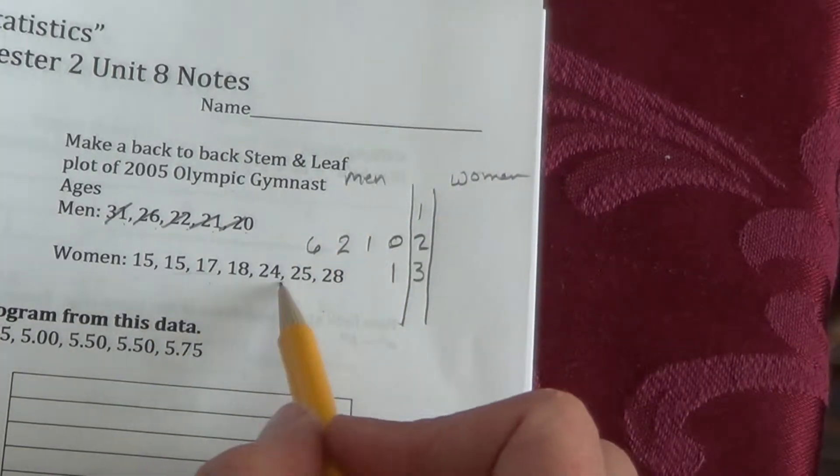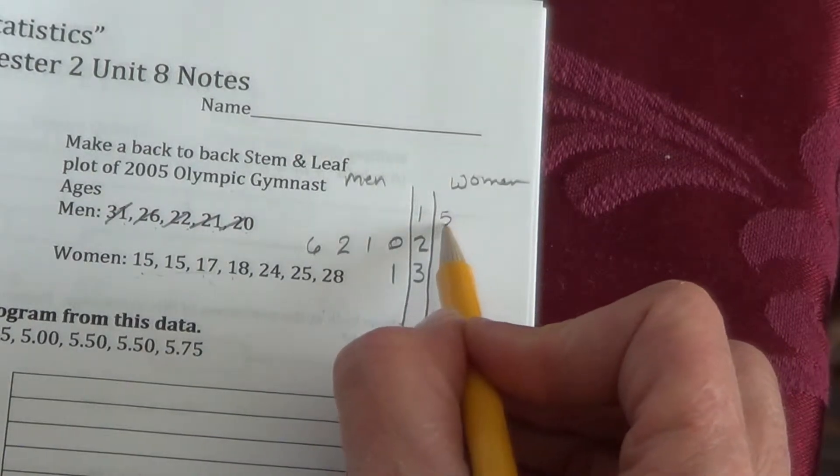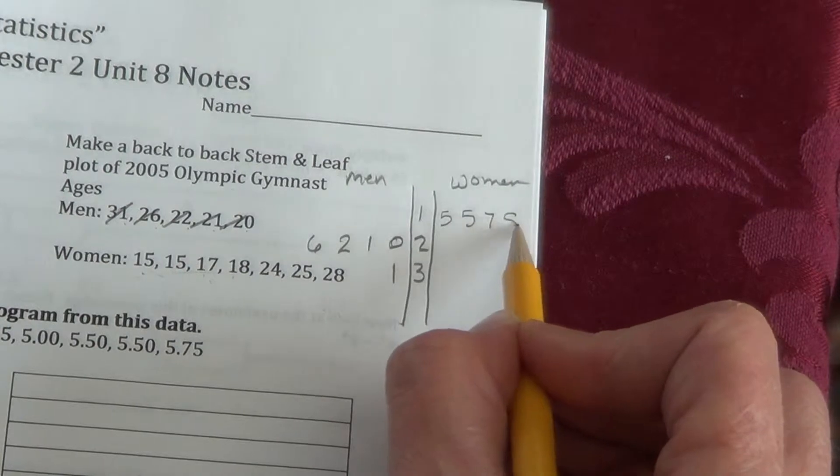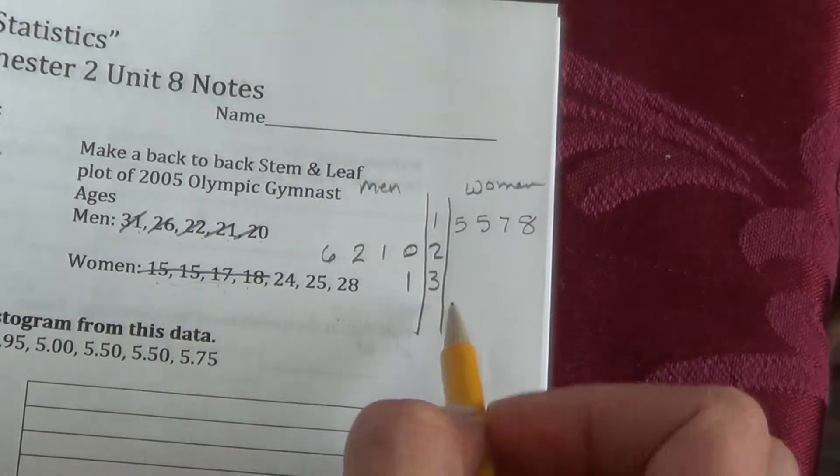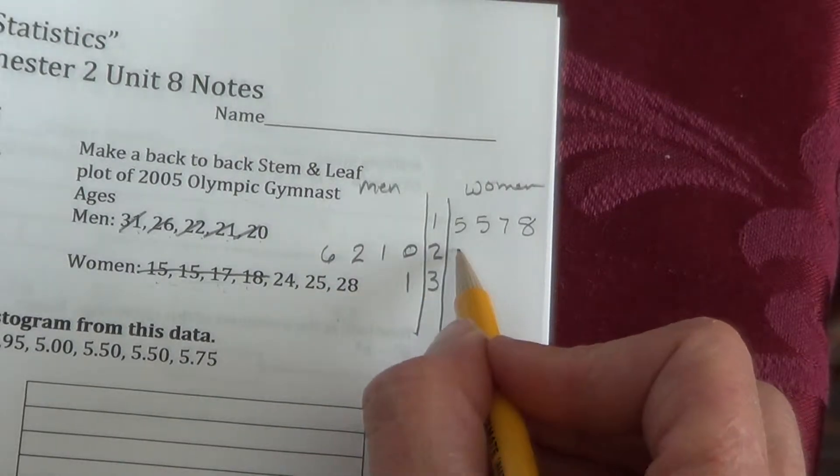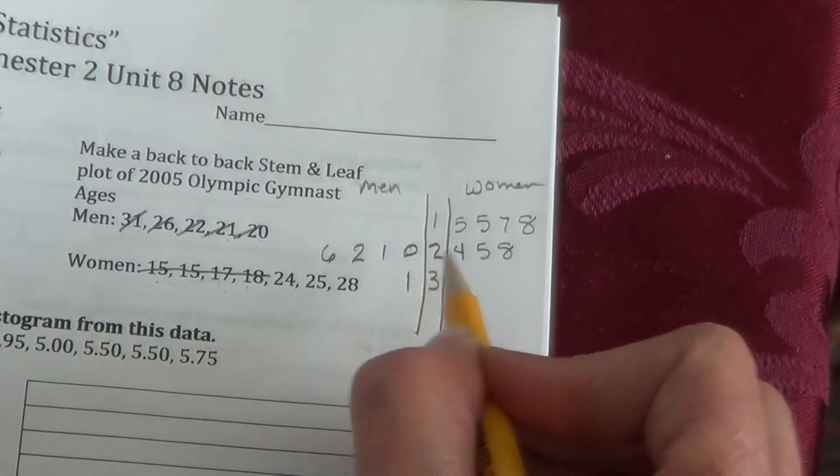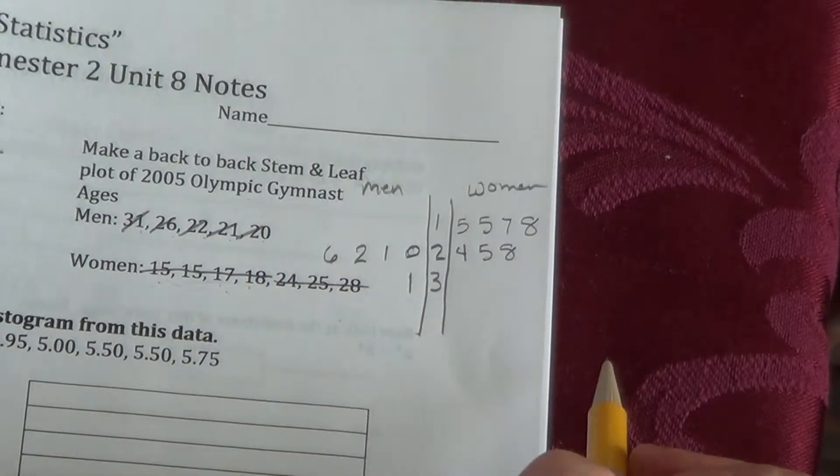On the women, we have 15, 15, 17, 18, so we'll do 15, 15, 17, 18, that removes all of those, 24, 25, and 28, 24, 25, and 28. Again, we don't have any women in the 30s. I'd be curious what you guys think of that, too.